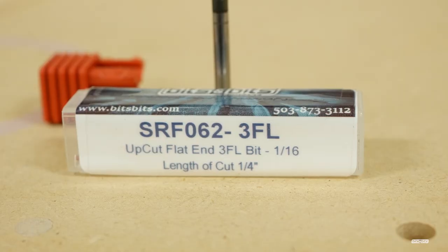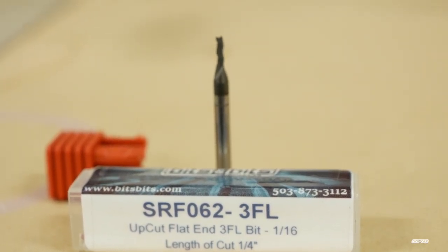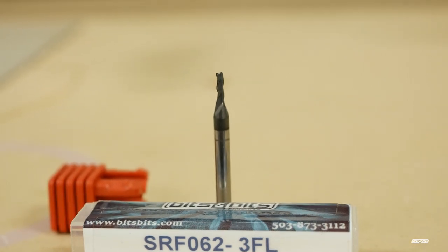The second toolpath utilizes a 1/16th upcut end mill to cut the body of the ruler out of the aluminum sheet.